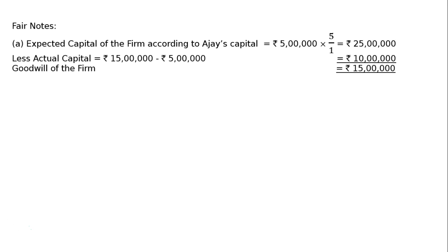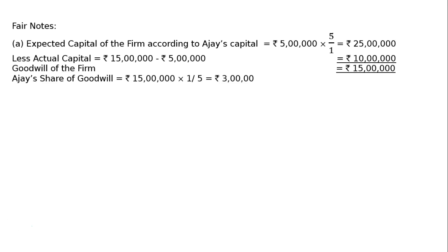Hence, the goodwill of the firm is Rs. 25 lakhs minus Rs. 10 lakhs, that is Rs. 15 lakhs. Ajay's share of goodwill is Rs. 15 lakhs multiplied by 1/5, that is Rs. 3 lakhs. He should have paid Rs. 3 lakhs as premium for goodwill. Now we can start with the journal entries in Part B.